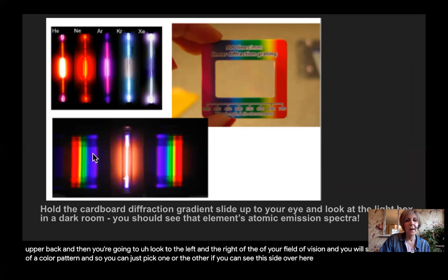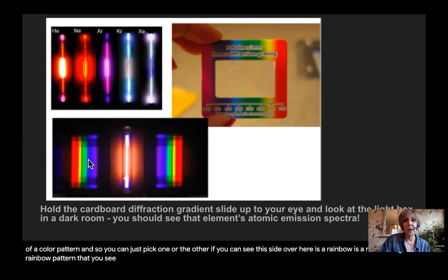And so you can just pick one or the other. If you can see this side over here is a rainbow, it's a mirror image of a rainbow pattern that you see over here. And so that's what you're going to draw when the lights go back on.